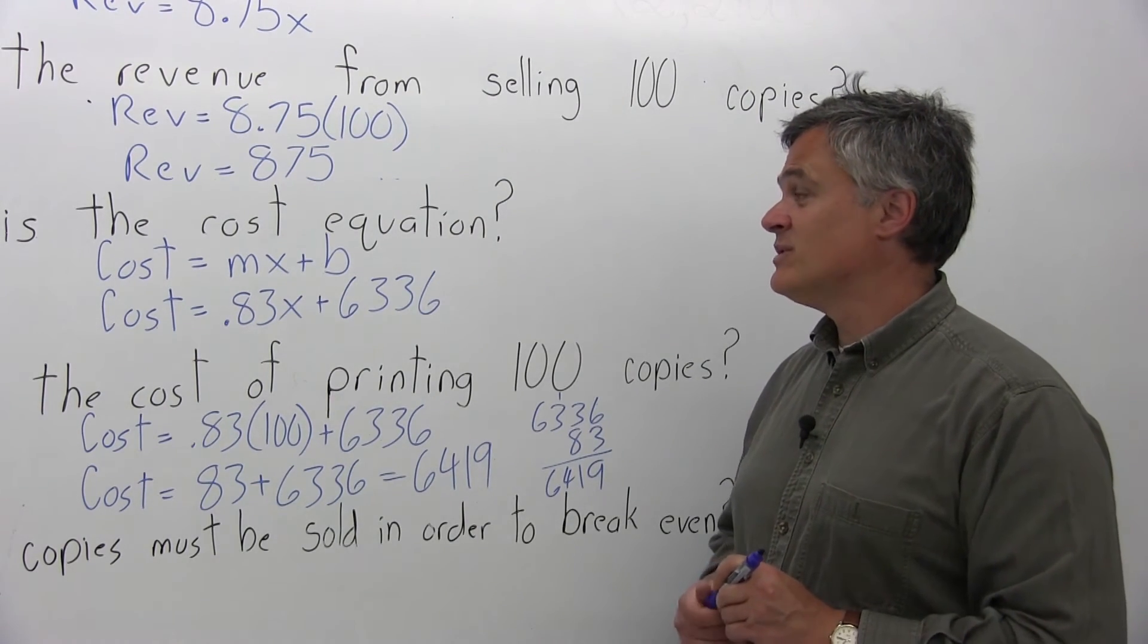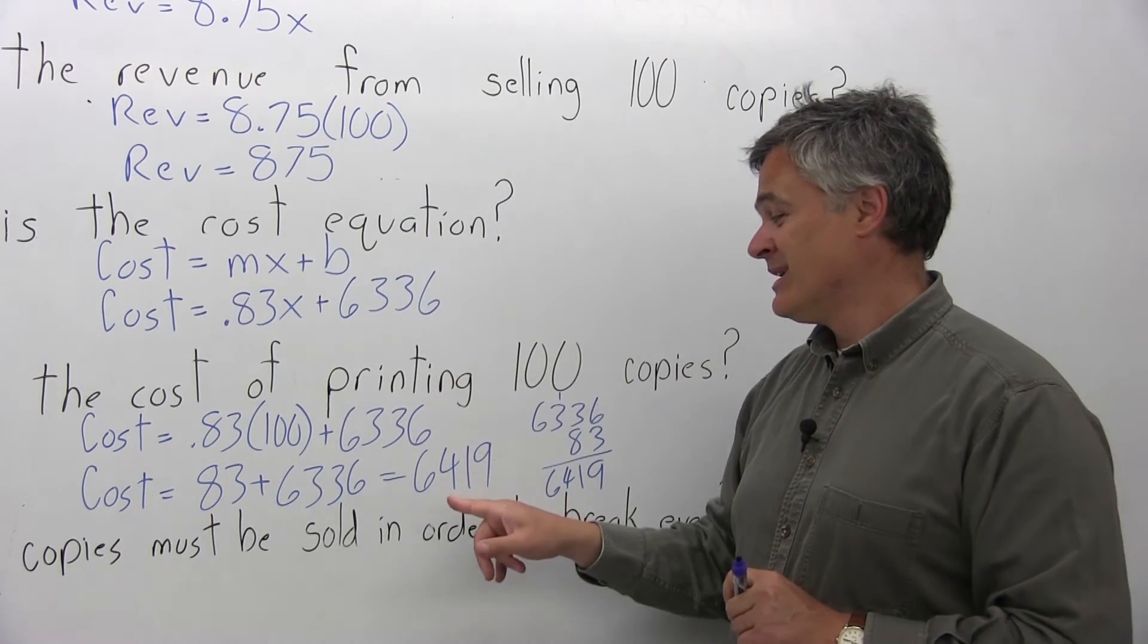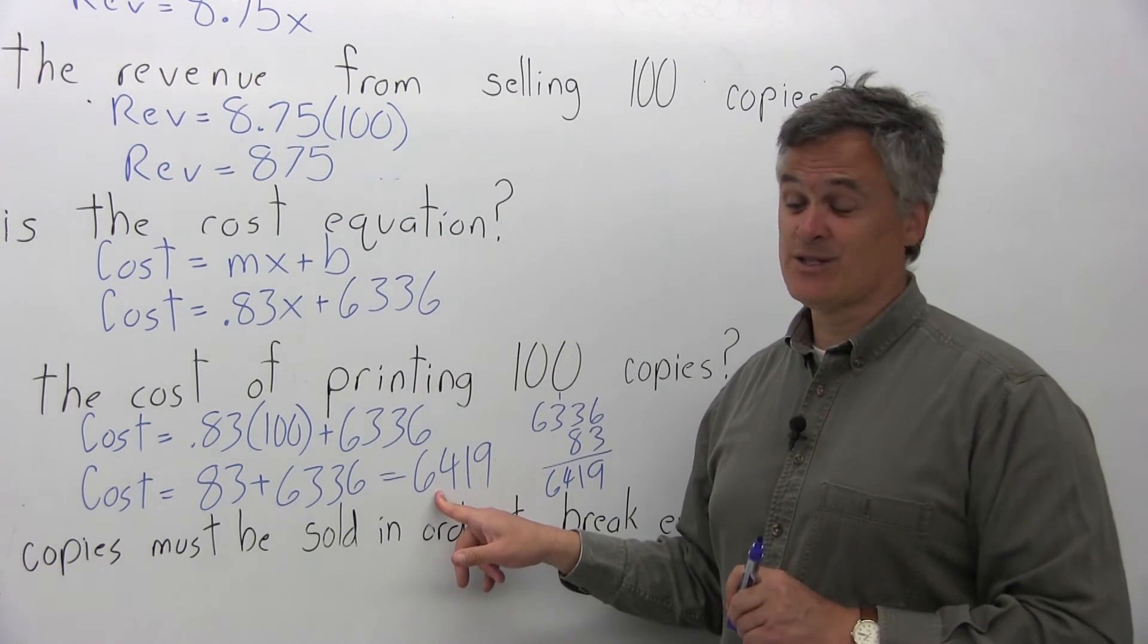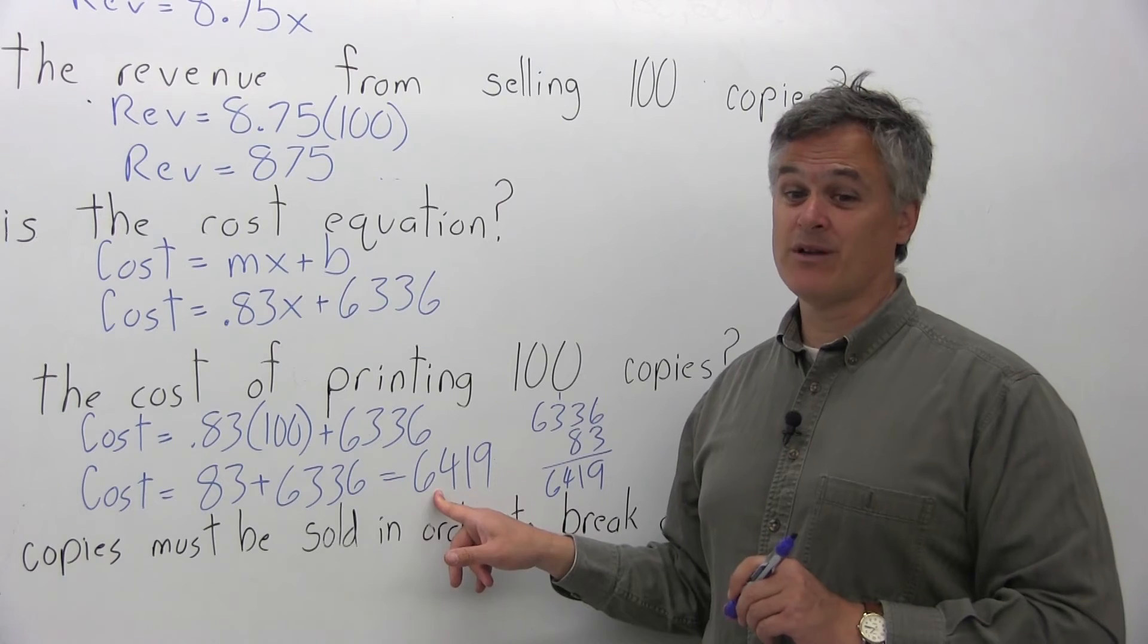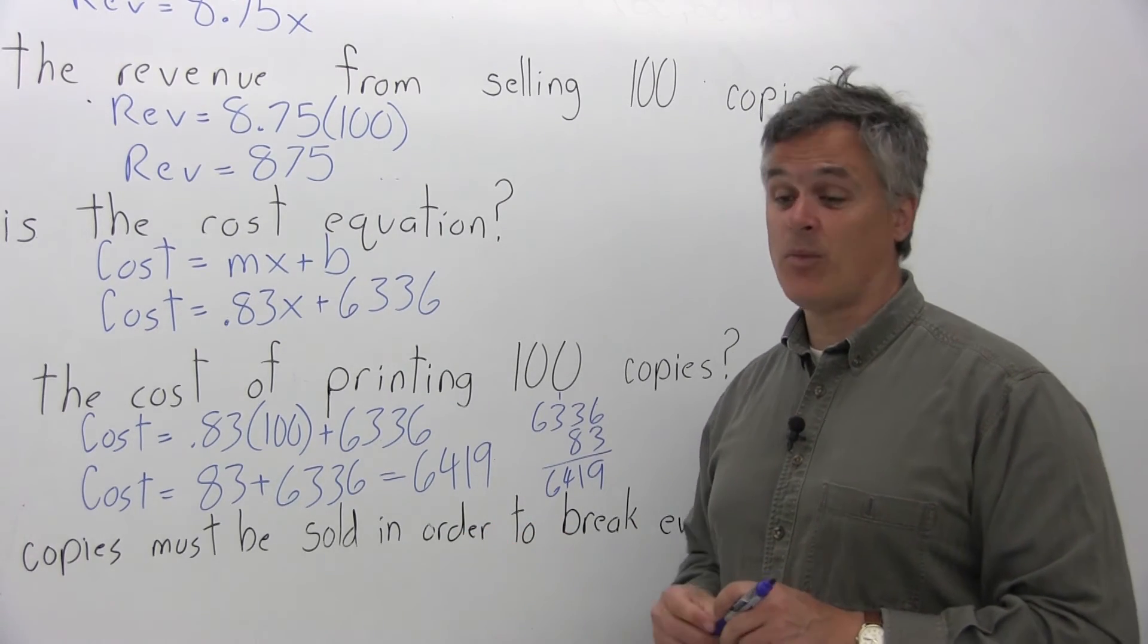You can see if you sell 100 copies, you have a revenue of $875. It's going to cost you $6,419. You've lost a lot of money if you've only sold 100 copies. You have to sell a lot more.